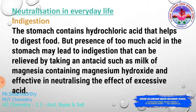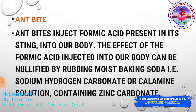The next topic is ant bite. When an ant bites, it injects formic acid present in its sting — as you already know, the sting of an ant contains formic acid. The formic acid injected into our body can be neutralized by rubbing baking soda on the affected area. Baking soda neutralizes the formic acid because formic acid is acidic in nature. When we rub baking soda at the affected place, it is converted to a neutralized state.